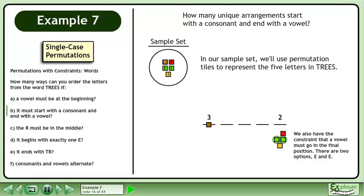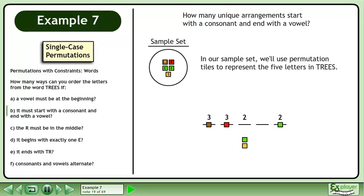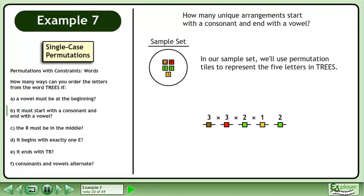We also have the constraint that a vowel must go in the final position. There are two options: E and E. We have resolved the constraints. Any remaining tile can go in the second position, so there are three options. There are two options for the third position, and one option for the fourth position. Multiply the numbers together to get 36 arrangements.